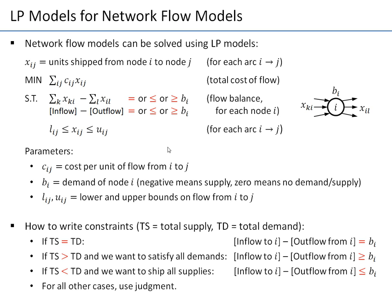The second constraint type covers bounds on decision variables: xij must be at least some lower value lij and at most some upper value uij. This is a more complex version of the non-negativity constraint. When lij and uij are omitted in the network flow, lij defaults to zero and uij defaults to plus infinity, which matches the standard LP default.